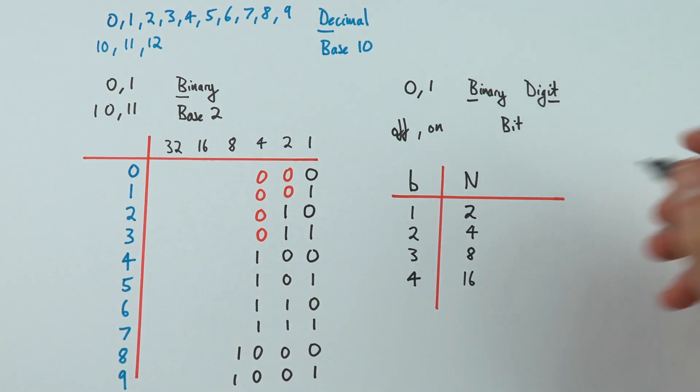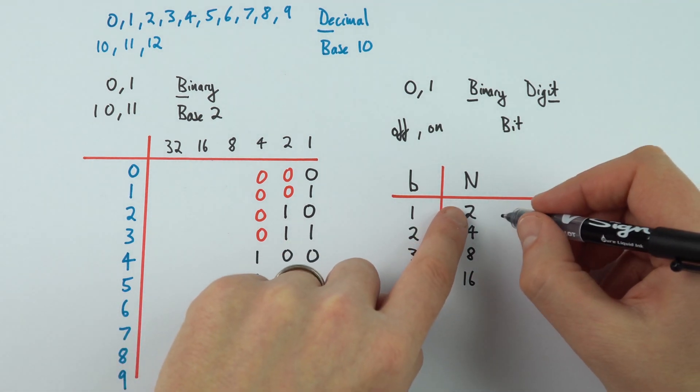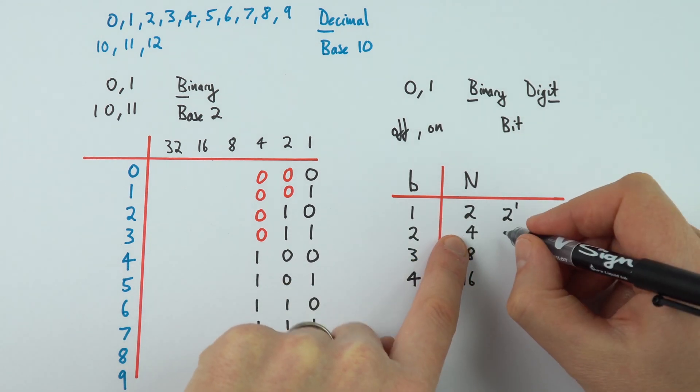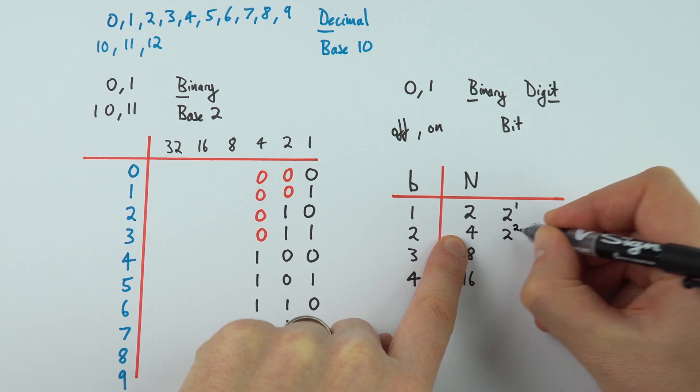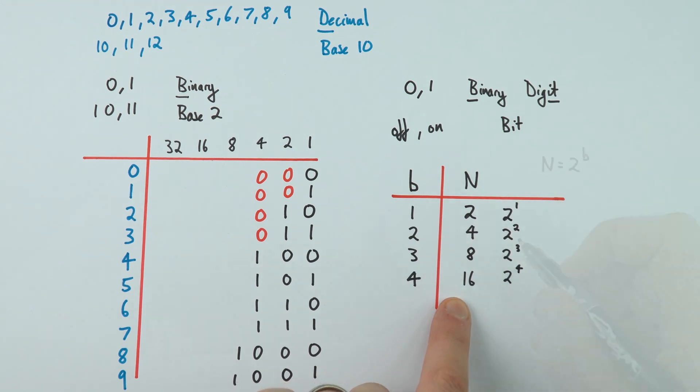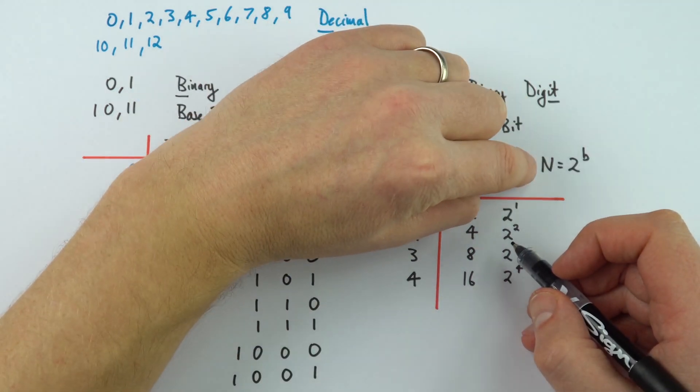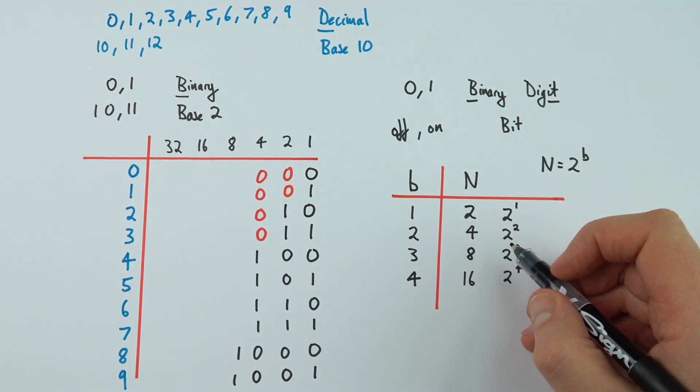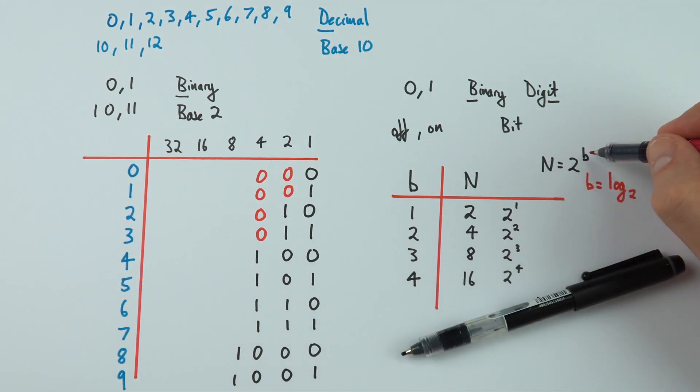In actual fact, there's a link between these two numbers, because we can say that this is equal to 2 raised to the power of 1, 4 is equal to 2 to the power of 2, we've got 2 to the power of 3, 2 to the power of 4, and so on. Now, we can write this as the number of alternatives is equal to 2 raised to the power of the number of bits. Now, we can also rearrange this, and we do that by taking logs of both sides, but here we're going to be using log to the base 2. So, the number of bits is equal to log to the base 2 of the number of alternatives.